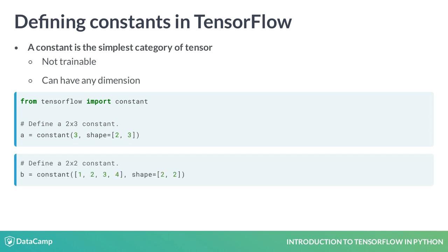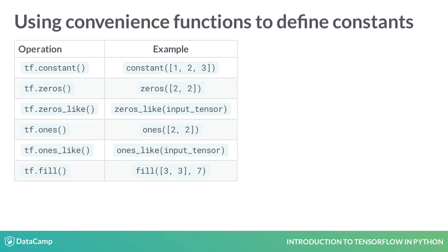The constant B is a two-by-two tensor, which is constructed from the one-dimensional tensor [1, 2, 3, 4]. In some cases, there are more convenient options for defining certain types of special tensors. You can use the zeros or ones operations to generate a tensor of arbitrary dimension populated entirely with zeros or ones. You can use the zeros_like or ones_like operations to copy the dimension of some input tensor. Finally, you can use the fill operation to populate a tensor of arbitrary dimension with the same scalar value in each element.